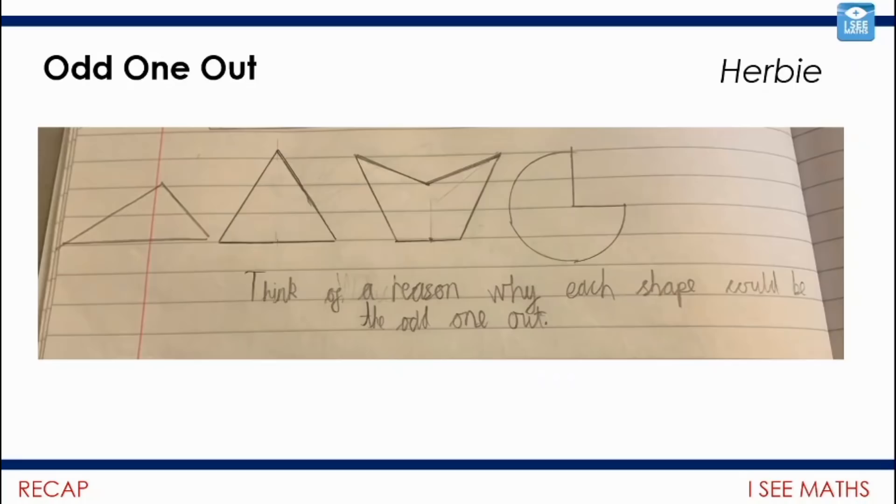Or this one, these four shapes from Herbie. So which one could be the odd one out? I went for the triangle on the left—it's got no lines of symmetry. The second triangle, all its sides are the same length, it's the only shape that has that property. I went for the third shape—it's got two obtuse angles, it's the only shape that's got two obtuse angles. And what about the fourth shape? Well, it's got a curved side. Wonderful examples. Thank you again Herbie. Great stuff.